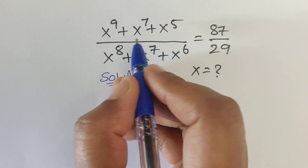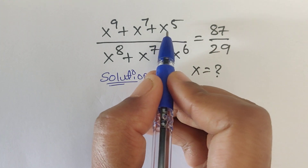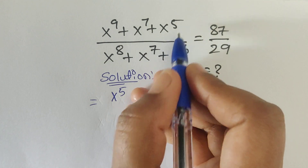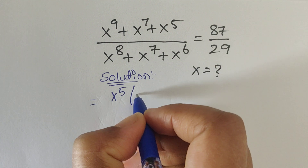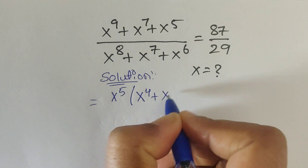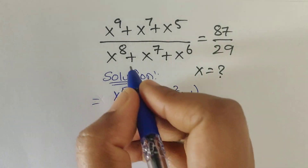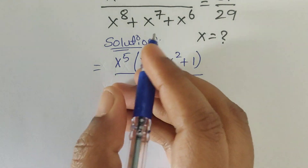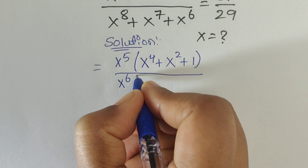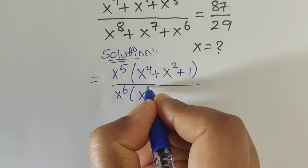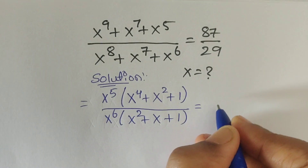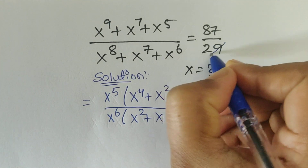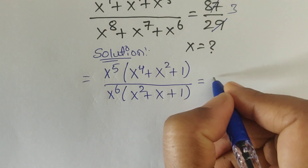In the numerator we have a common factor of x power 5, so we can take out x power 5 as common. The leftover terms are x power 4 plus x power 2 plus 1. In the denominator we have a common factor of x power 6, so we take out x power 6. The leftover terms are x square plus x plus 1. On the right side we have 87 divided by 29, and since 29 times 3 equals 87, we get 3.